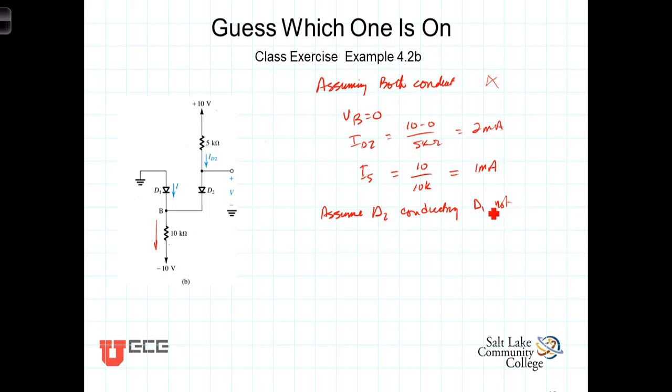If that's the case, D2 is conducting, D1 is not conducting, then ID2, coming down here, would equal, have to equal, ID5.